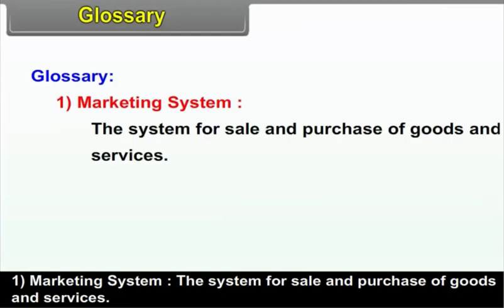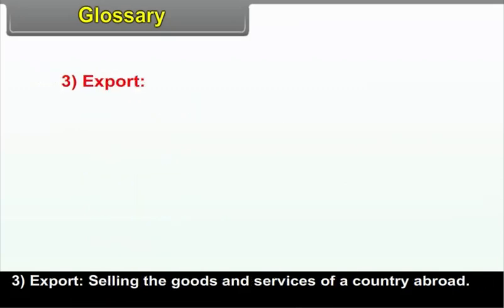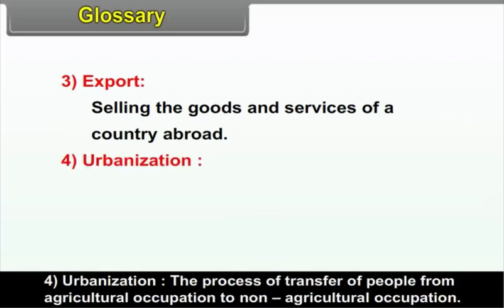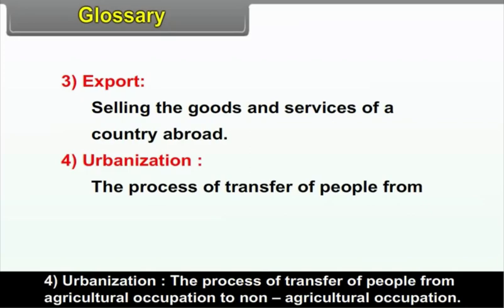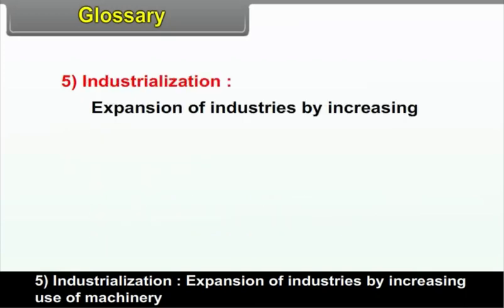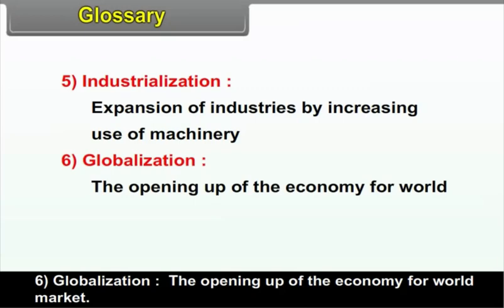Glossary: Marketing system — the system for sale and purchase of goods and services. Import — goods and services purchased by the home country from abroad. Export — selling the goods and services of a country abroad. Urbanization — the process of transfer of people from agricultural occupation to non-agricultural occupation. Industrialization — expansion of industries by increasing the use of machinery. Globalization — the opening up of the economy for the world market.